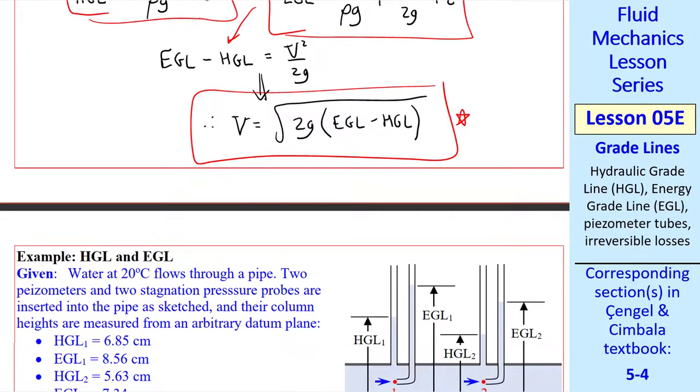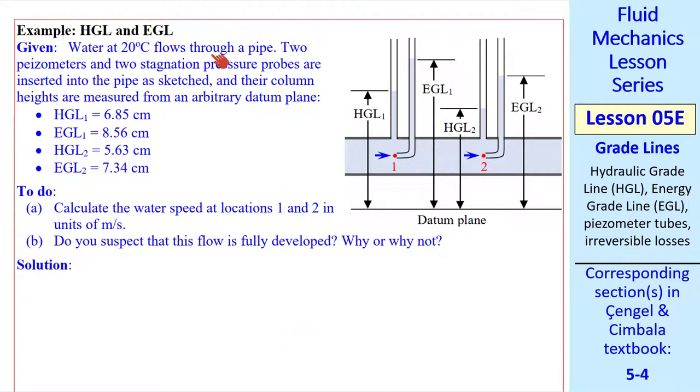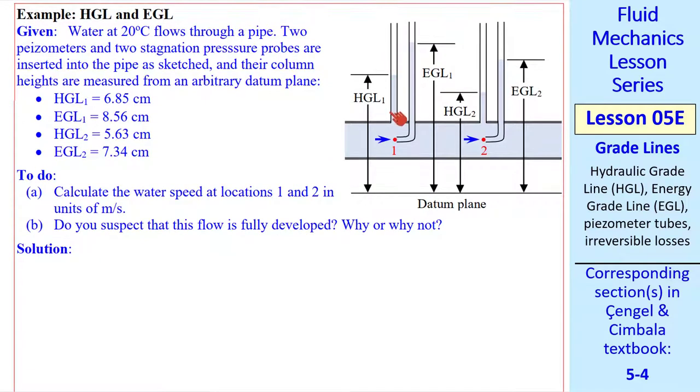Now let's do an example. We have water flowing at 20 degrees C through a pipe. We have two static pressure taps or piezometers, and we have two total pressure probes at 1 and 2. So we call these distances HGL1, EGL1, HGL2, and EGL2. We want to calculate the water speed at locations 1 and 2 in units of meters per second. I'll call those speeds U1 and U2.